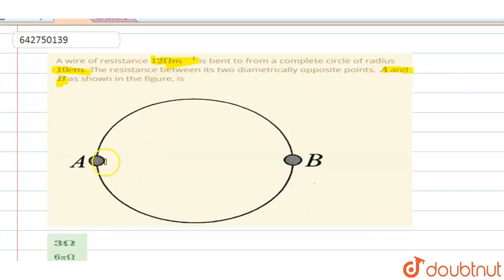So in the problem, what they are doing is a wire which is bent in the form of a circle. And this wire has a resistance of 12 ohm per metre. And the radius of the circular form which they have bent, that is from here to here, the radius of the circular part they are telling it as 10 centimetre.